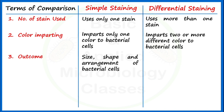Along with shape, simple staining also tells us about the arrangement of bacterial cells in our sample — whether they are singly placed, present in pairs, forming bunches or groups, or present in chains. This type of information can easily be derived about a culture after performing simple staining.